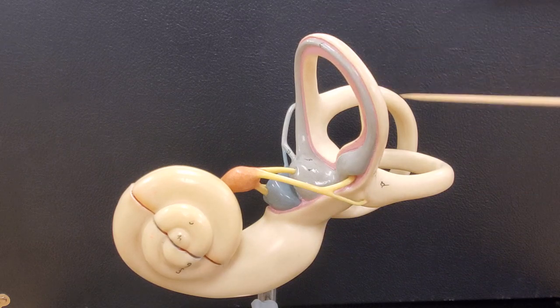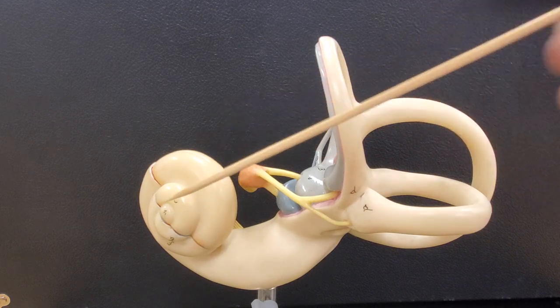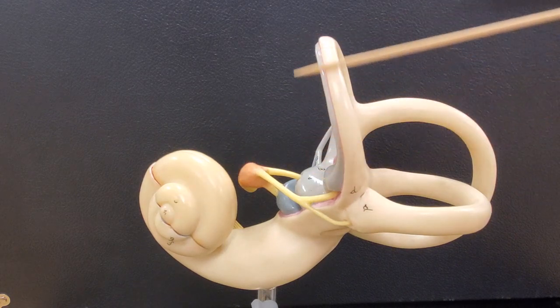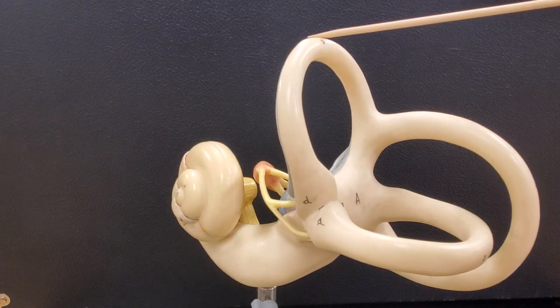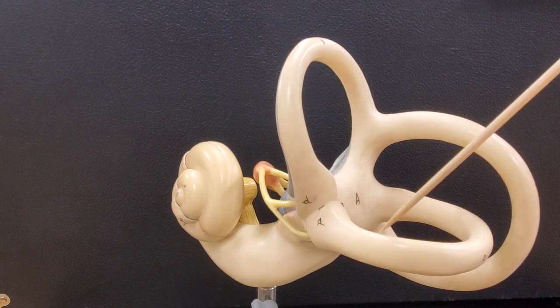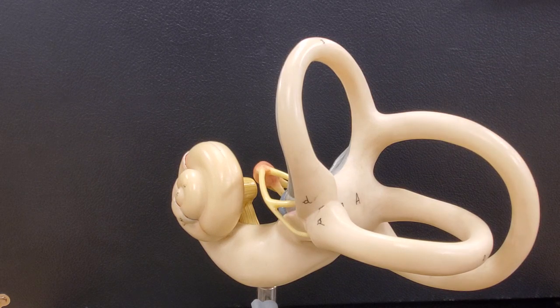And then you have the three semicircular canals. The three semicircular canals, if we're looking at this from an anterior view, this would be called the anterior semicircular canal, this one that comes forward here. This one that's lying on its side would be the lateral semicircular canal, and this one back here would be the posterior semicircular canal.